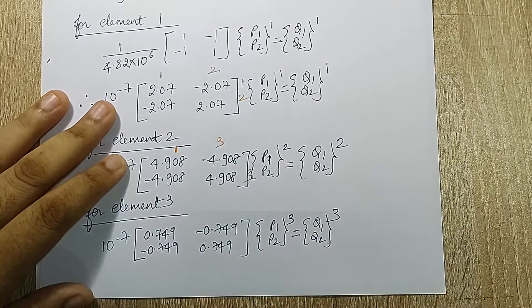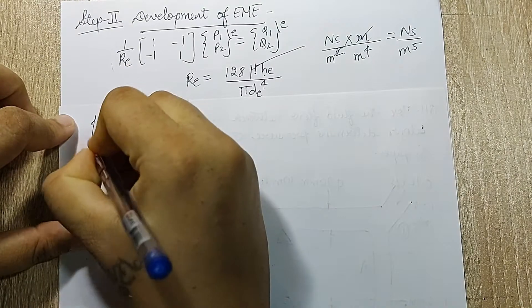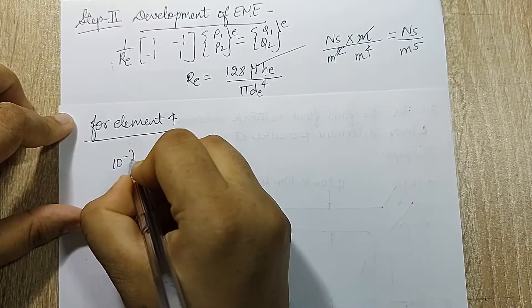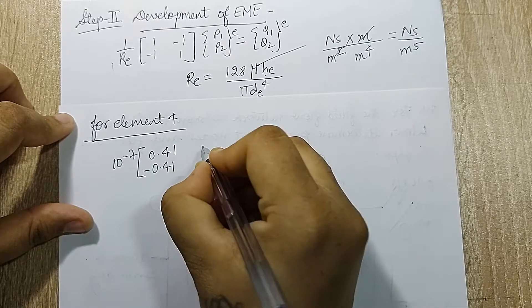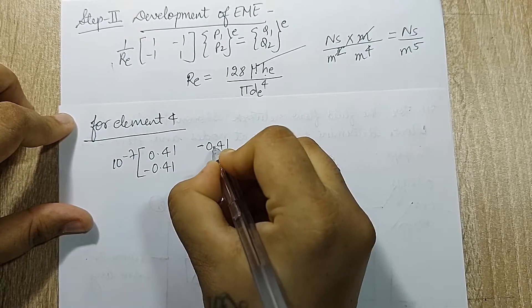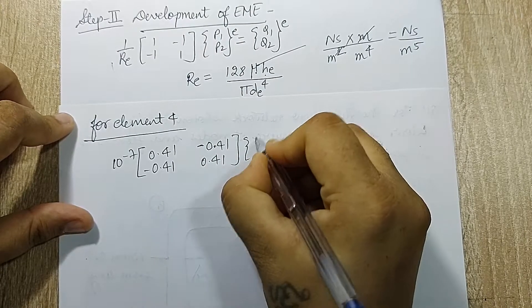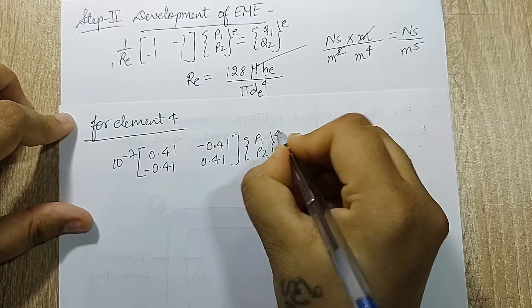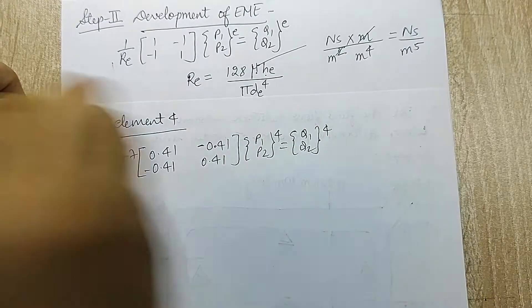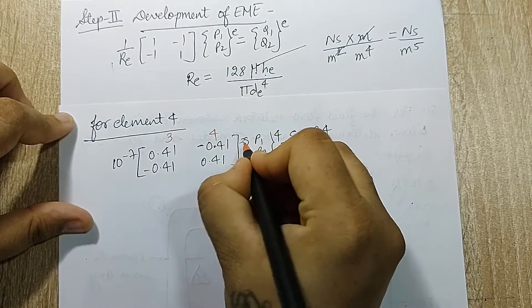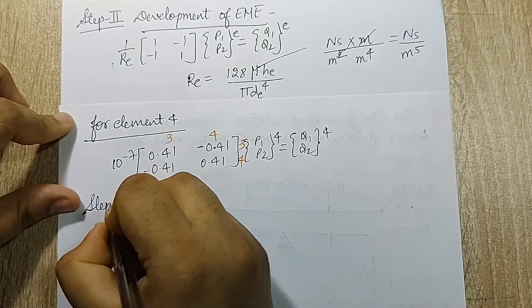Element 3 connects nodes 2 and 4. For element 4, the value is 10⁻⁷ × 0.41 × [1, −1; −1, 1], and element 4 connects nodes 3 and 4.